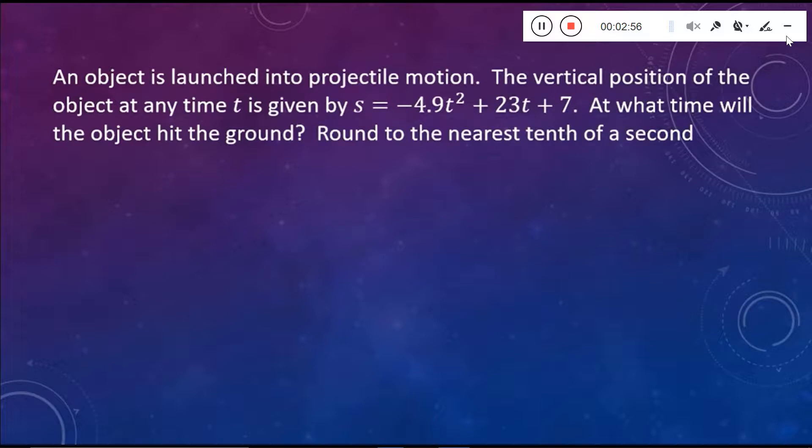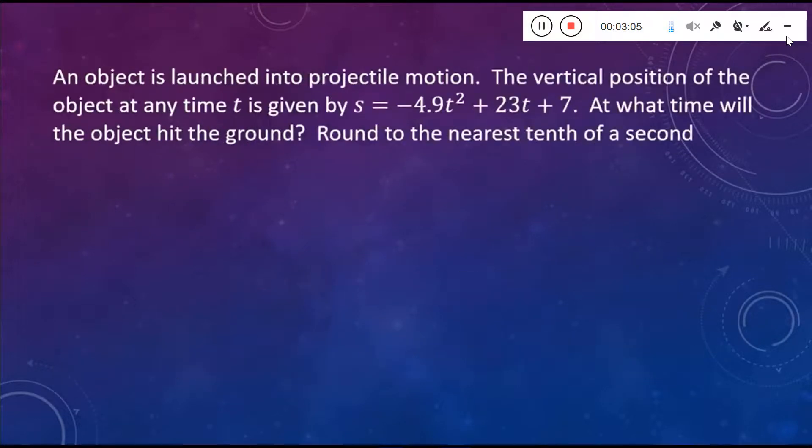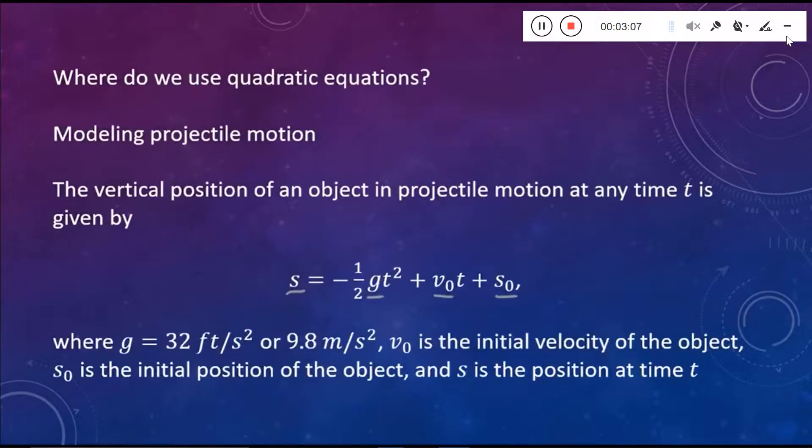Now, just looking at this model, just before we go on with solving the actual problem, we can notice that the number in front of t squared is negative 4.9. And just with that, you can figure out what we're using here, either meters or feet. We're using meters because if you substitute in 9.8 for g, and then you multiply it by that negative 0.5, then you will get the negative 4.9.